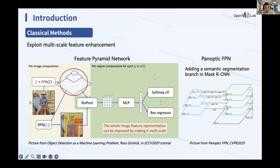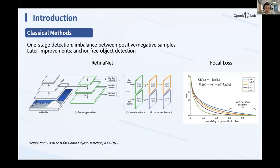Two-stage approaches face issues — they can be slow and have operators like RoI Align that are hard to deploy. So people now tend to use one-stage detectors like the YOLO series. A classic one-stage detector is RetinaNet, which uses FPN and detects at each feature pyramid level. It also identifies an imbalance between positive and negative samples and introduces Focal Loss to address this. Later improvements like anchor-free object detectors are based on RetinaNet.